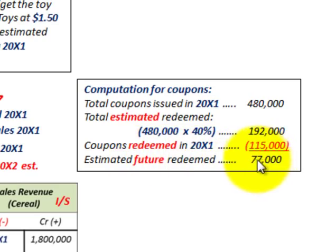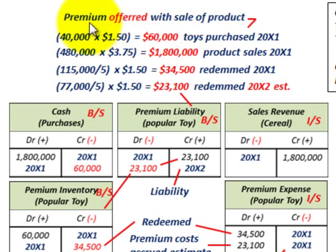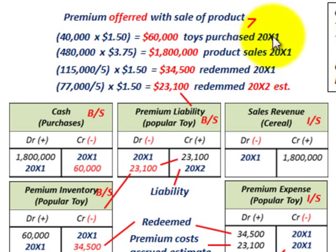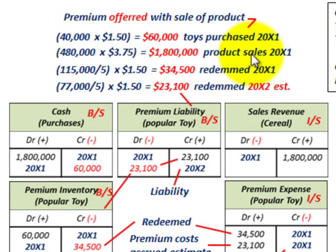Now let's go over the calculations. The premium is offered with the sale of a product — here you get a popular kids toy if you buy five boxes of cereal. For toys purchased: the company bought forty thousand toys at a dollar fifty cents each, for a total of sixty thousand dollars paid in 20x1. For product sales: they sold four hundred eighty thousand boxes at three dollars and seventy five cents each, for one million eight hundred thousand dollars in 20x1.